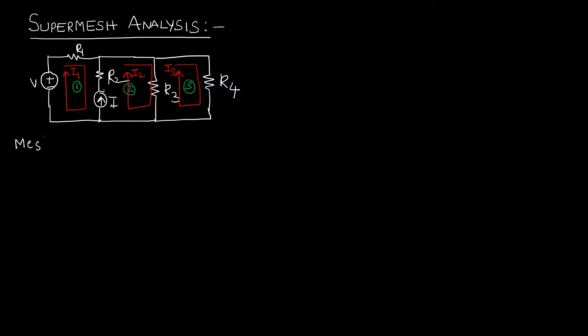Let us go with mesh 1. In this first mesh, we have R1, R2, a current source, and a voltage source. KVL means you find the voltage across each element and sum all voltages in a closed loop equal to zero. We can calculate voltage across R1 and R2, and the voltage source V is directly given. However, coming to the current source, we can't easily find the voltage drop across it. So at this particular point we need to apply supermesh analysis. Since current I is common for mesh 1 and mesh 2, we are going to write a single equation for both.